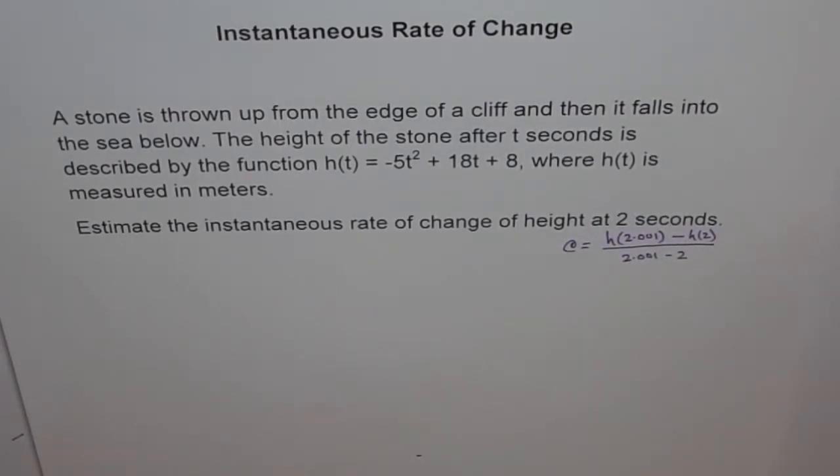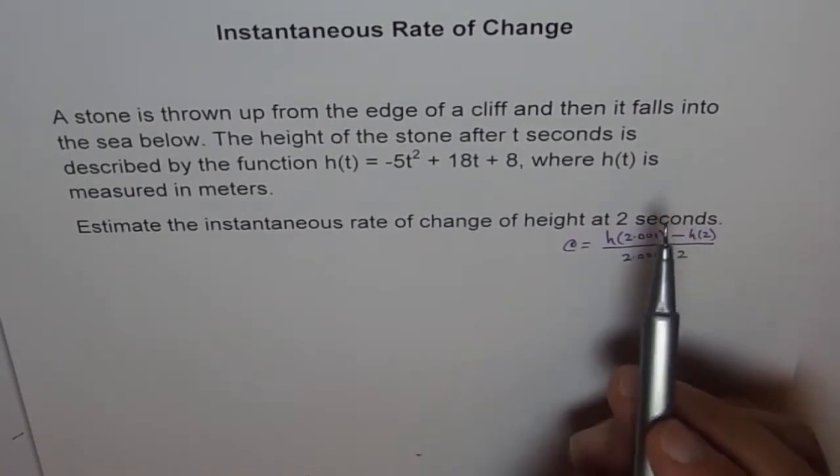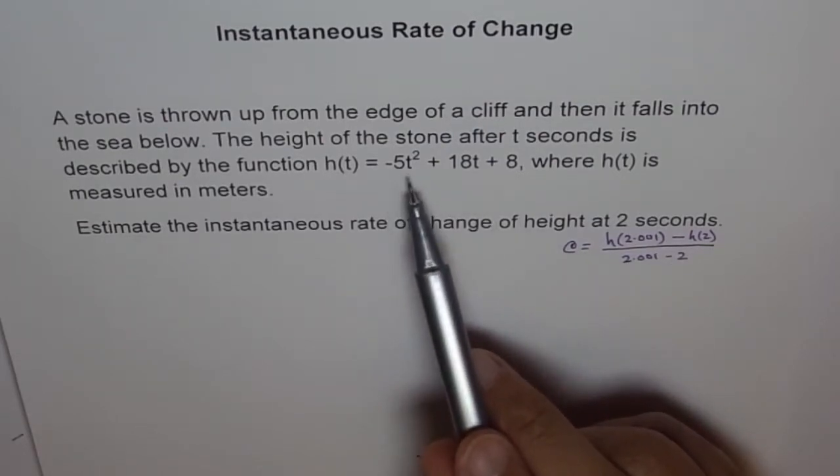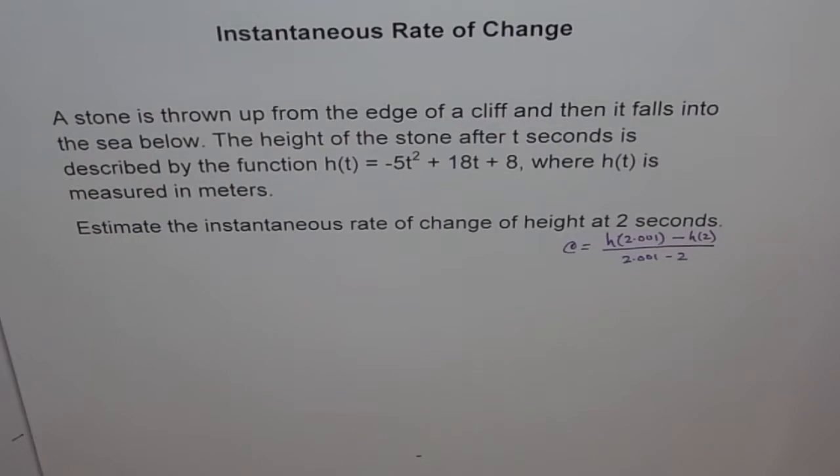If you calculate this, you get the slope of the secant and that will give you the instantaneous rate of change of height with respect to time at t equals 2 seconds. When it is estimate instantaneous rate of change of height at 2 seconds, you can always do this method and get your answer.